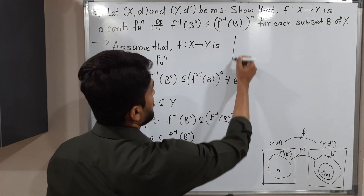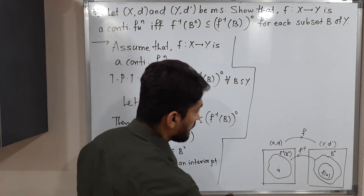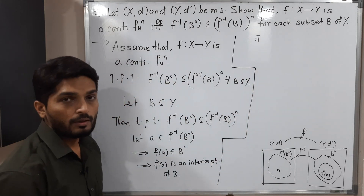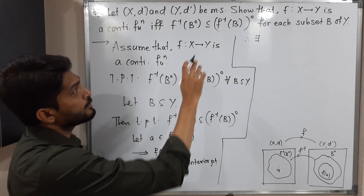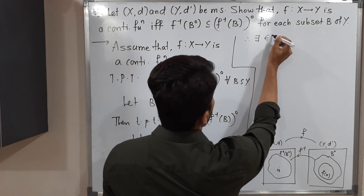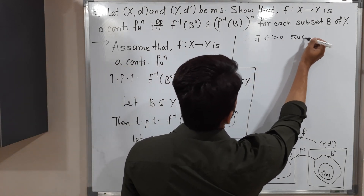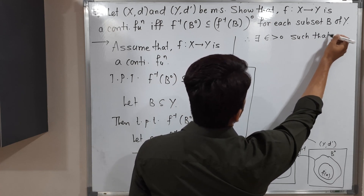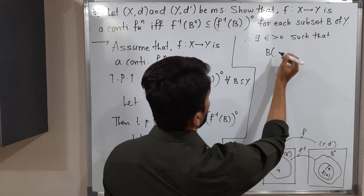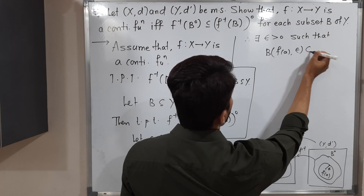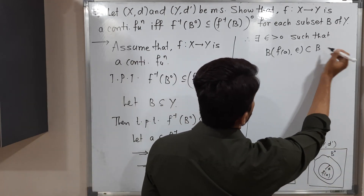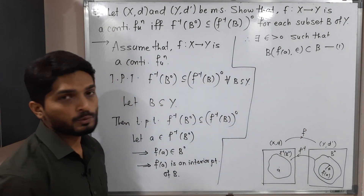Therefore, there exists ε > 0 such that the ball B(f(a), ε) is a subset of B. This is an important step, so let us call it (1).